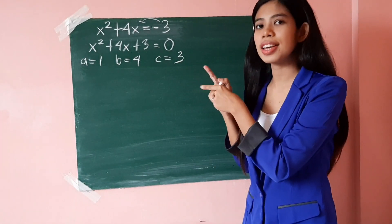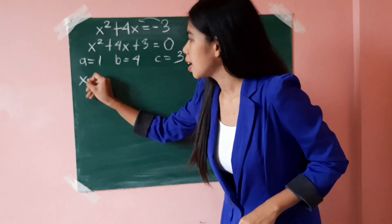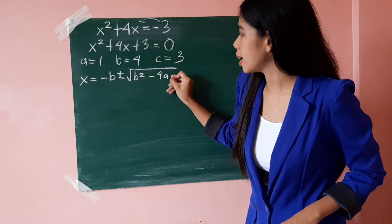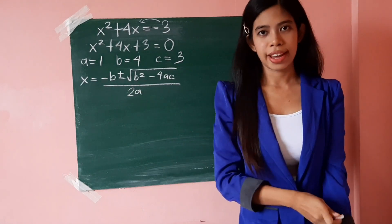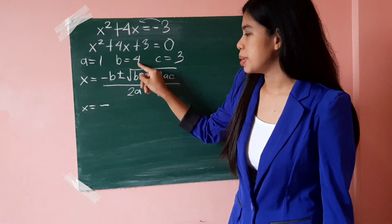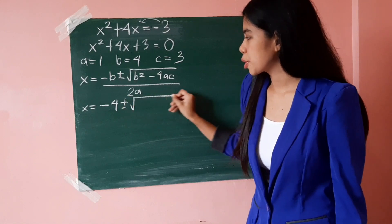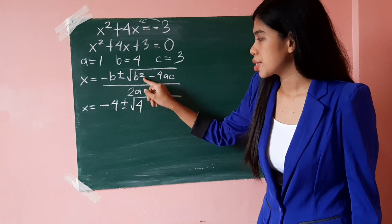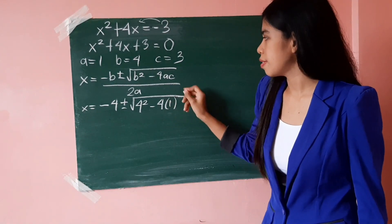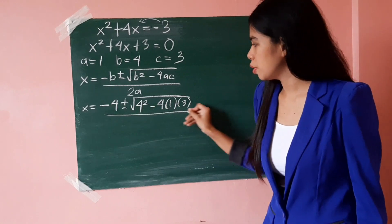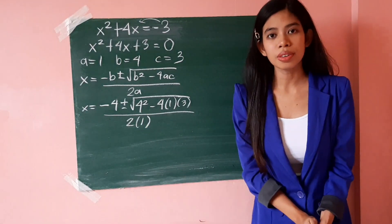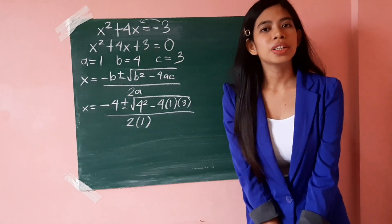Let us now substitute these values in the quadratic formula: x equals negative b, plus or minus square root of b squared minus 4ac, all over 2a. So we have x equals negative 4, plus or minus square root of 4 squared minus 4 times 1 times 3, all over 2 times 1. Since we have already substituted the given values, we are now ready to simplify.